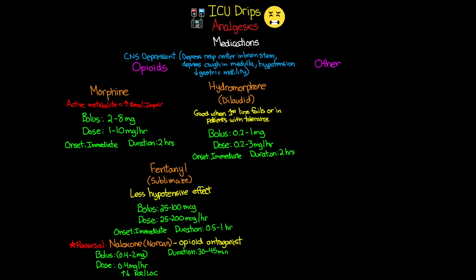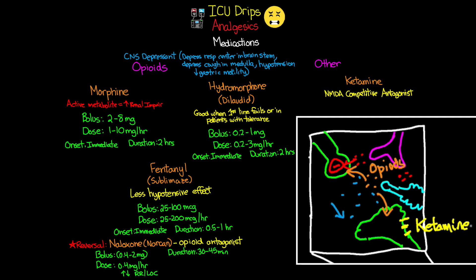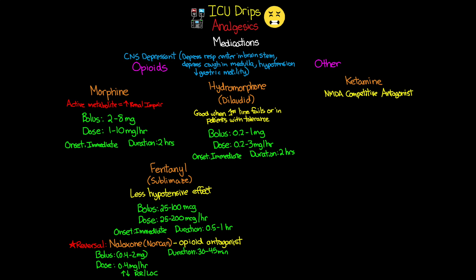Moving into our other category: the one medication to cover here is ketamine. Ketamine was also discussed in a previous lesson on IV sedation. Ketamine is an NMDA competitive antagonist. Going back to the pain pathway, we have NMDA and AMPA receptors on the second-order neuron in the dorsal horn of the spinal cord. Ketamine acts on these receptors to raise the threshold of depolarization for that second-order neuron, so it takes more pain and stimulation for the patient to perceive pain.